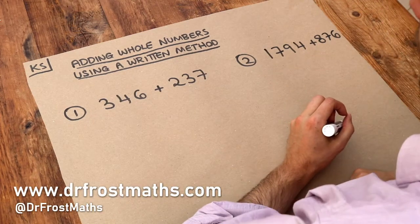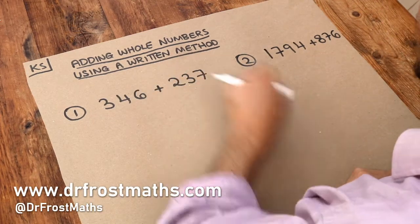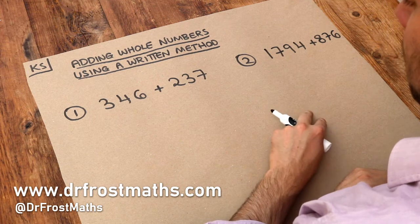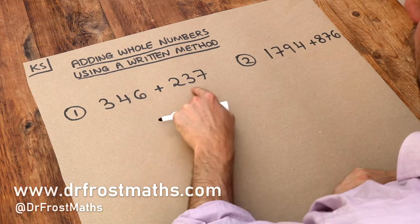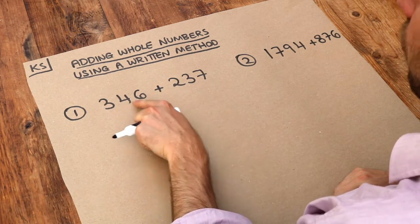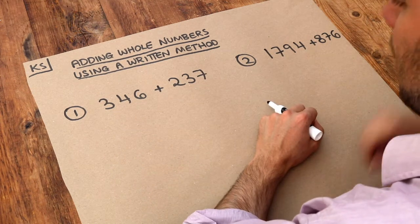Hello and welcome to this Dr. Ross Math key skill video on adding whole numbers using a written method. So we've got two three-digit numbers here. We're doing 346 plus 237.